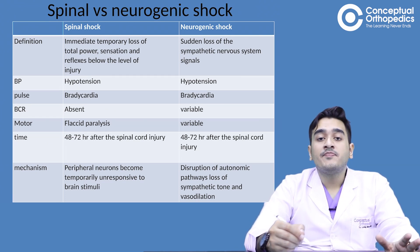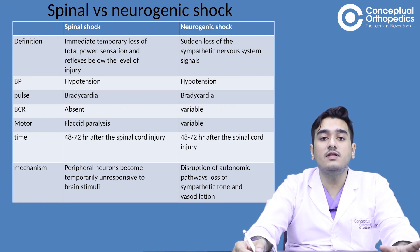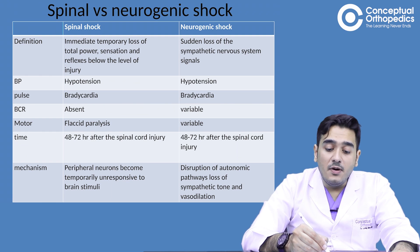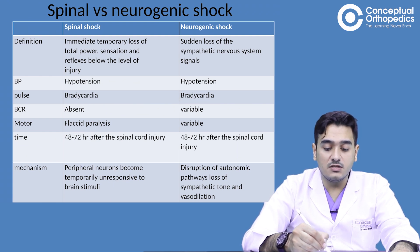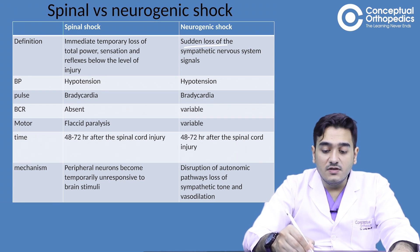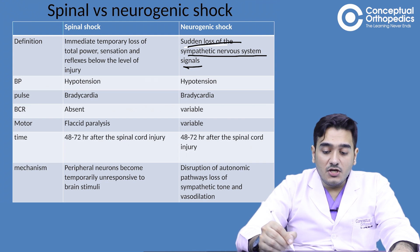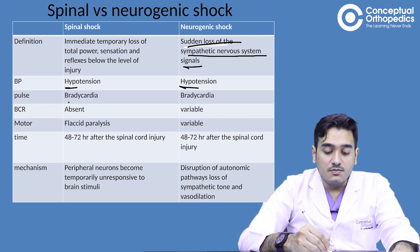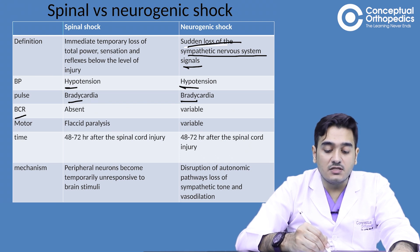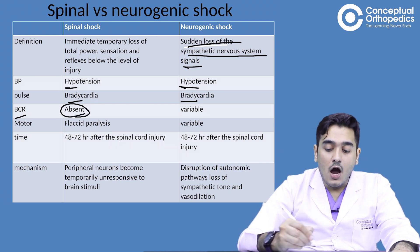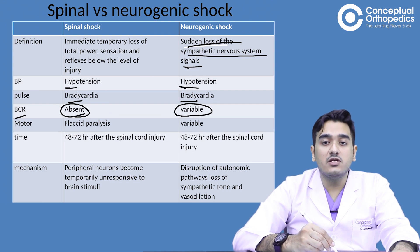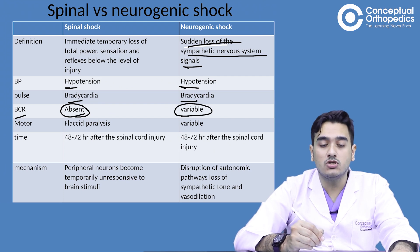Candidates often get confused between spinal shock and neurogenic shock. Spinal shock involves an immediate, temporary loss of all power, sensation, and reflexes below the level of injury. Neurogenic shock is a sudden loss of sympathetic nervous system signals. In both, blood pressure is hypotensive and pulse is bradycardic. The bulbocavernosus reflex is absent in spinal shock but variable in neurogenic shock. Motor presentation in spinal shock is flaccid paralysis, while it is variable in neurogenic shock.